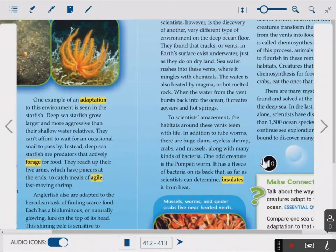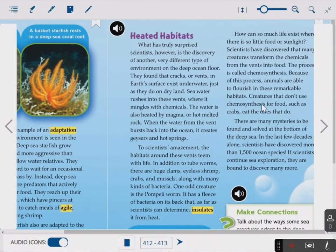What has truly surprised scientists is the discovery of another very different type of environment on the deep ocean floor. They found that cracks or vents in Earth's surface exist underwater, just as they do on dry land. Seawater rushes into these vents where it mingles with chemicals. The water is also heated by magma, or hot melted rock. When the water from the vent bursts back into the ocean, it creates geysers and hot springs. To scientists' amazement, the habitats around these vents team with life. In addition to tube worms, there are huge clams, eyeless shrimp, crabs and mussels, along with many kinds of bacteria. One odd creature is the Pompeii worm. It has a fleece of bacteria on its back that, as far as scientists can determine, insulates it from heat. So it has bacteria that it kind of wears like a jacket around its back to keep it warm, as far as scientists know. It might be for another reason, but no one knows.